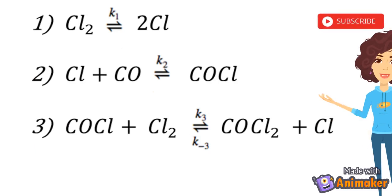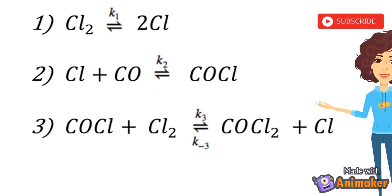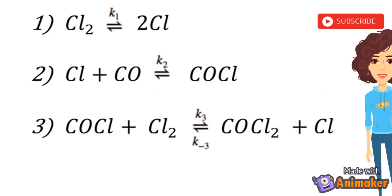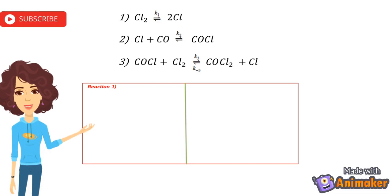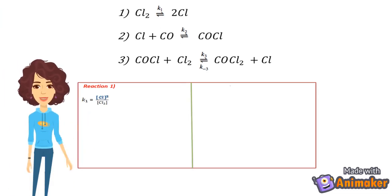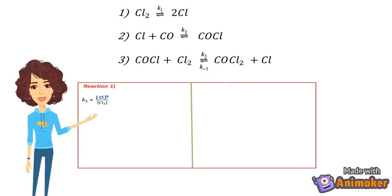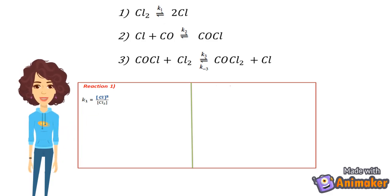Now we will write the rate equation for each of the reactions. To get the rate expression for the formation and decomposition of phosgene, we start with reaction 1. The rate expression can be written as K1 equals the concentration of the product, i.e. concentration of Cl, upon the concentration of the reactants, i.e. concentration of Cl2.